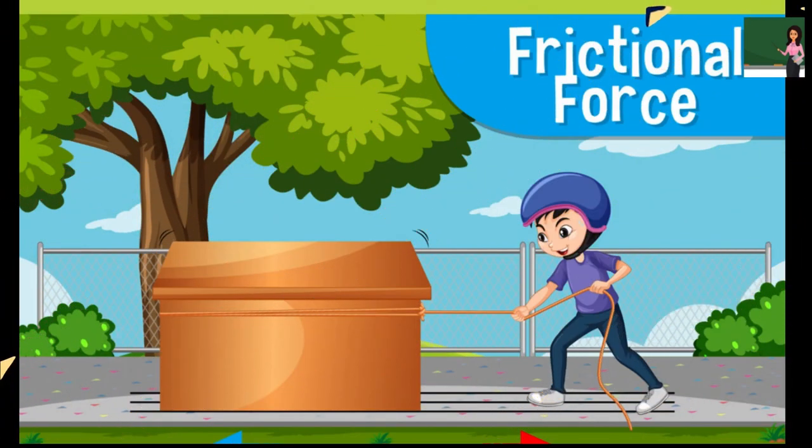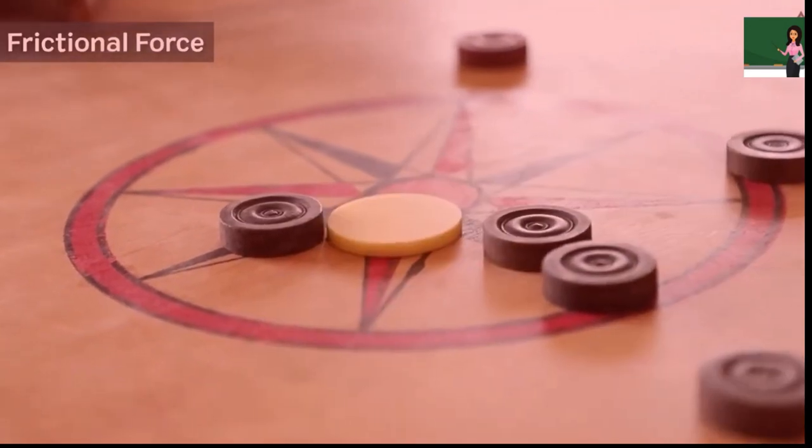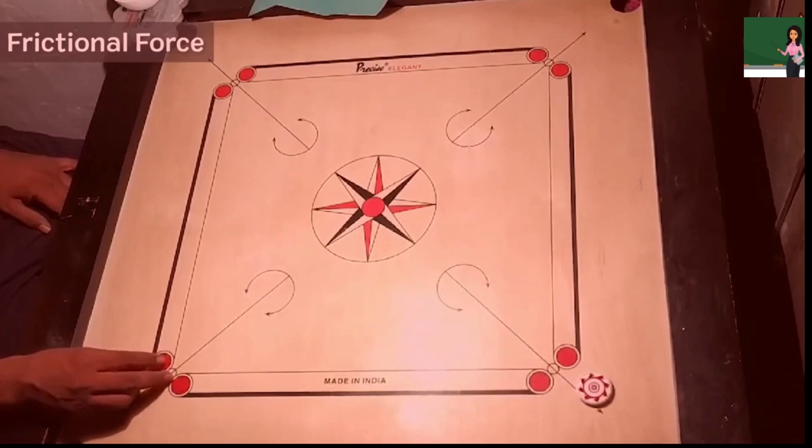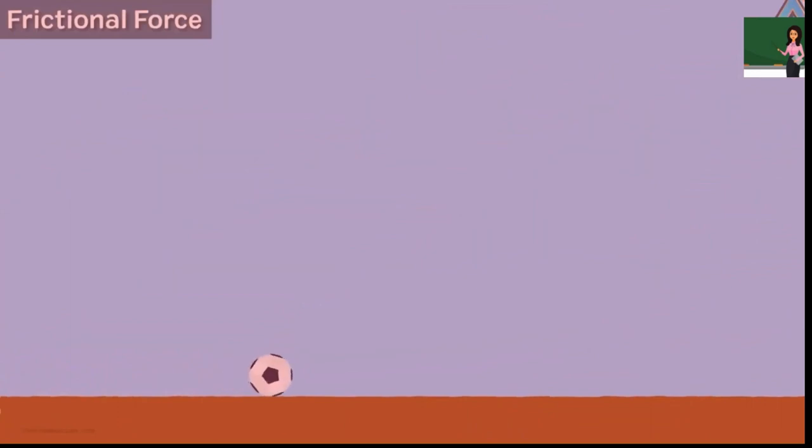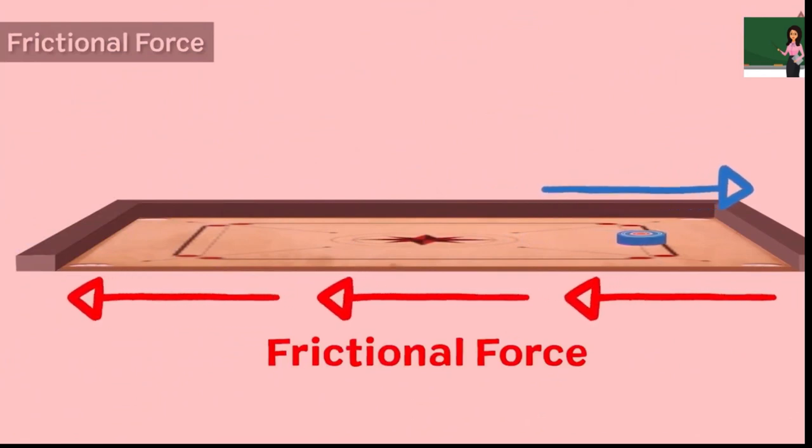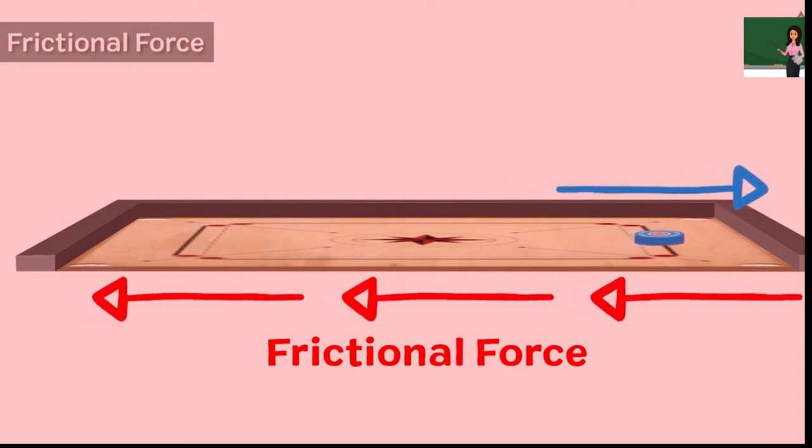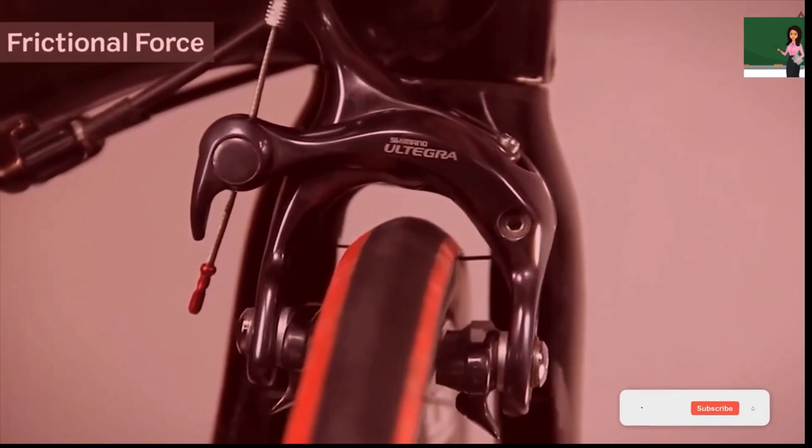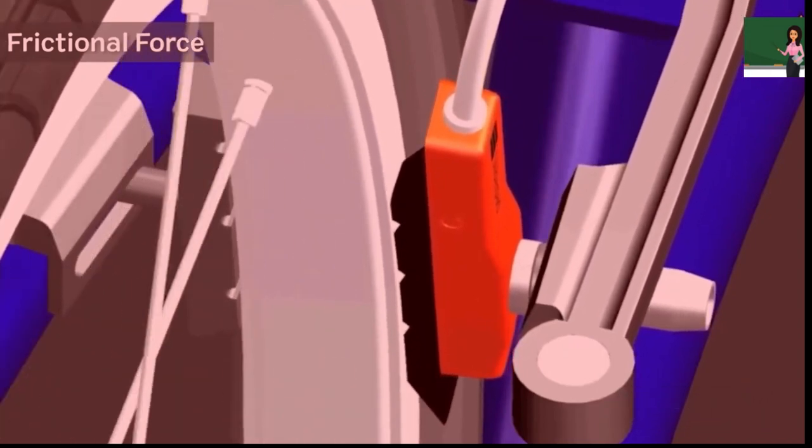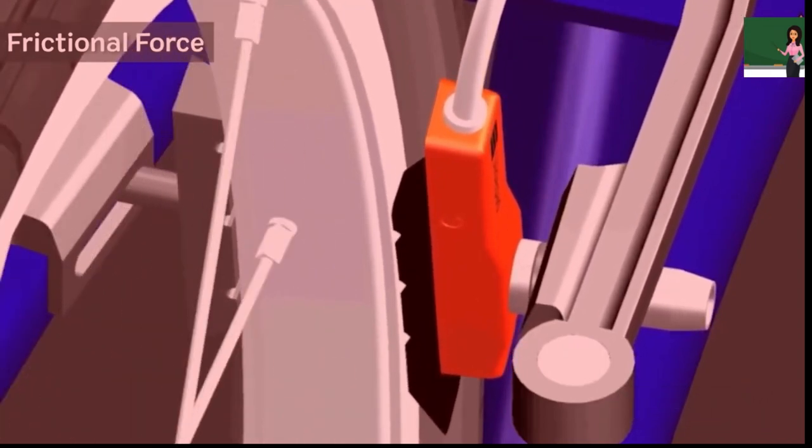Frictional force. When a carom piece is flicked lightly, it slides over the carom board, but stops at a certain distance. A ball rolling over a flat ground stops at a certain distance. Why does this happen? When two surfaces rub against each other, the force of friction comes into play. It always acts against the direction of motion. When a brake is applied while riding a bicycle, it stops after running a short distance. How does the brake work? Between which parts is friction produced?